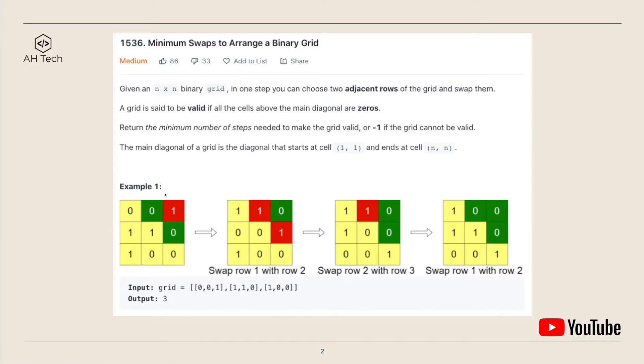For the first example, first we will swap row one and row two. So it will look like this. And then we will swap row two and row three. And finally swap row one and row two again. You can see that above the main diagonal it will become all zeros.